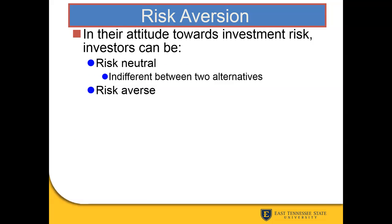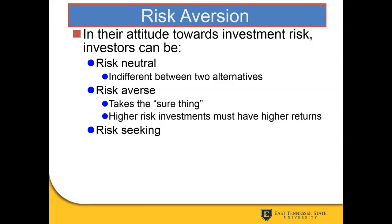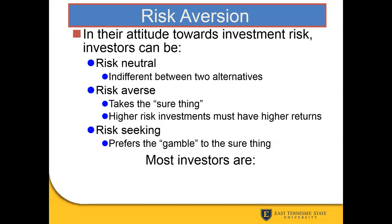There are a few different attitudes investors can take towards risk. First, investors can be risk neutral — indifferent, it doesn't really matter to them between two alternatives. Then they can be risk averse, avoiding risk at all costs, taking that sure bet with very low risk. And then we have risk seekers who like to take gambles. Overall, most investors tend to be risk averse — it's human nature to avoid unnecessary risks.